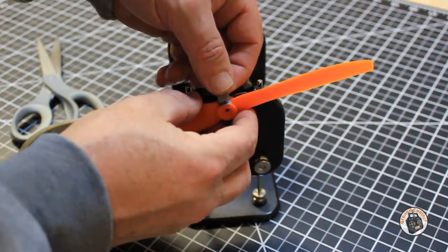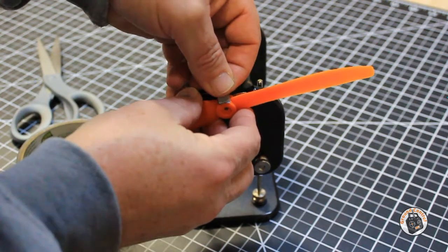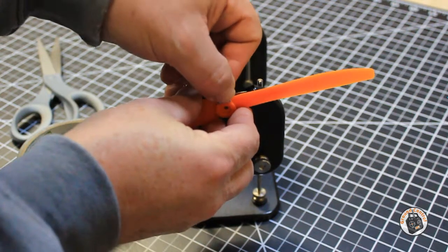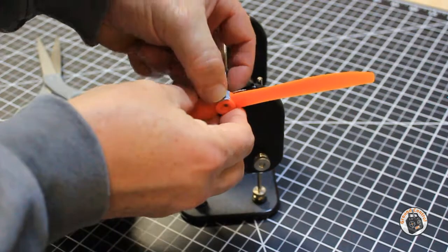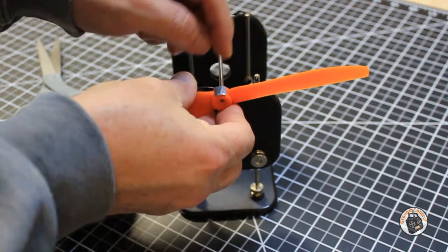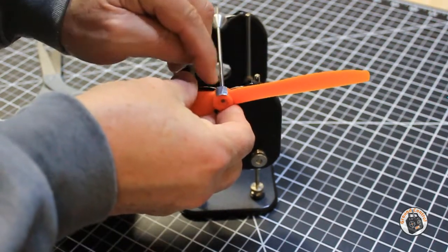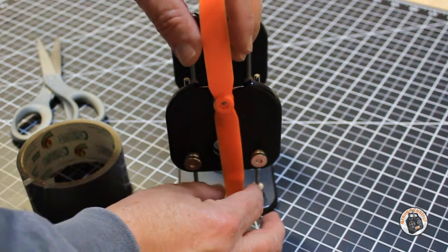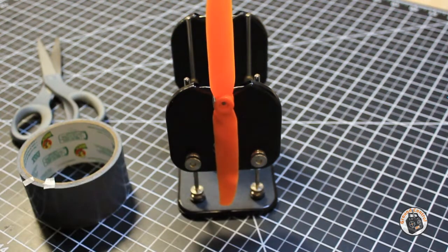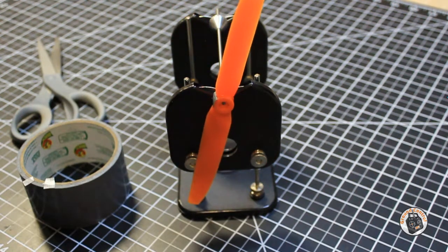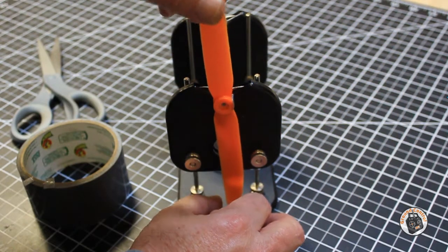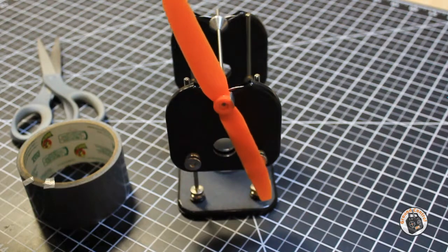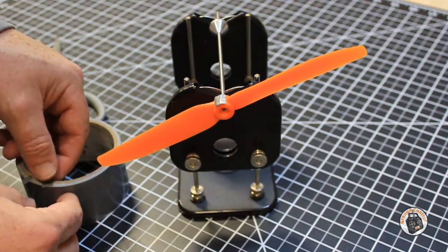So our third layer of duct tape across this hub. We're almost there, let's check it in the other direction too.